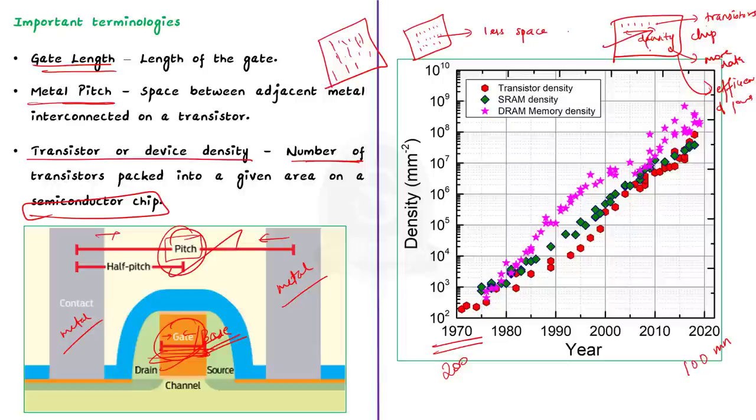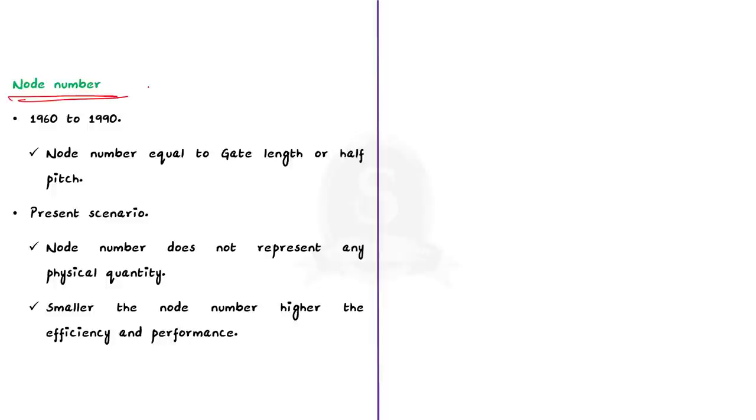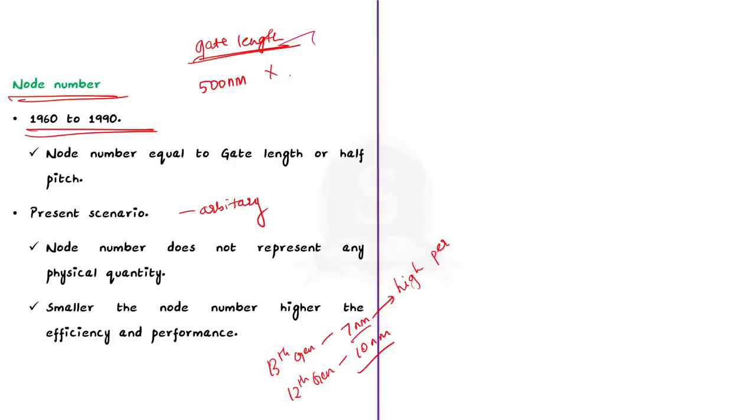The last important terminology is node number. Earlier, that is from 1960 to 1990, the node number was equal to the gate length or half of the metal pitch. For example, the 500 nanometer node transistor has a gate length and a metal half pitch of 500 nanometer. But currently, this is not followed. The node number has now become an arbitrary number. And it is not equated to any physical property of the transistor like gate length or half pitch. So, the transistor makers have been using the node number to represent the improvement in the transistor. For example, the 13th generation Intel processor features 7NM transistors, while the 12th generation Intel processor features 10NM transistors. So, even though the numbers that is 10 and 7 have lost meaning, people have come to identify that 7 nanometer performs better than 10 nanometer. So, these are some basic information about transistor.